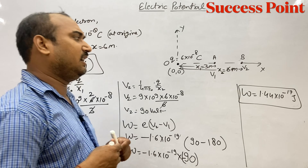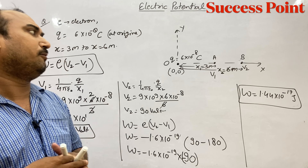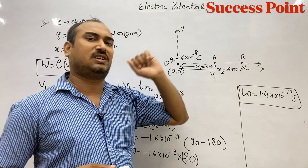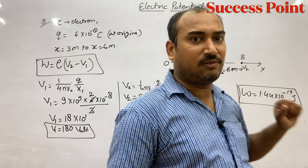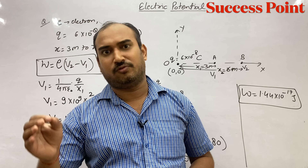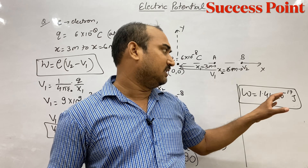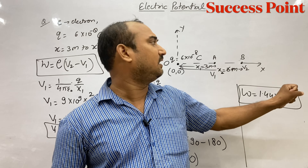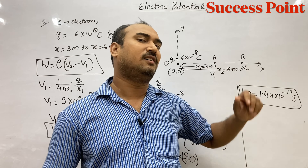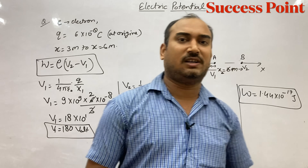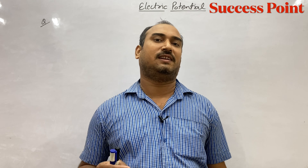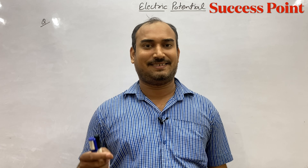Iska matlab yeh hua ki A point se B point tak le jaane ke liye, x = 3 se x = 6 tak le jaane ke liye, humko kitna work karna padega. To humko work karna padega 1.44 into 10 to the power minus 17 J. Ise fatafat note kar lijiye bacho.